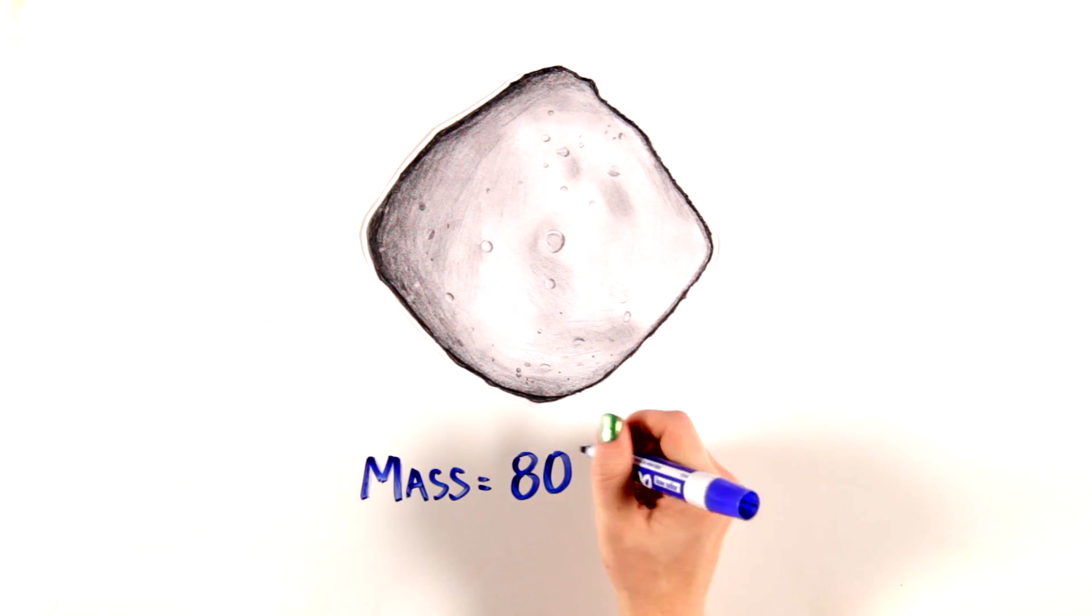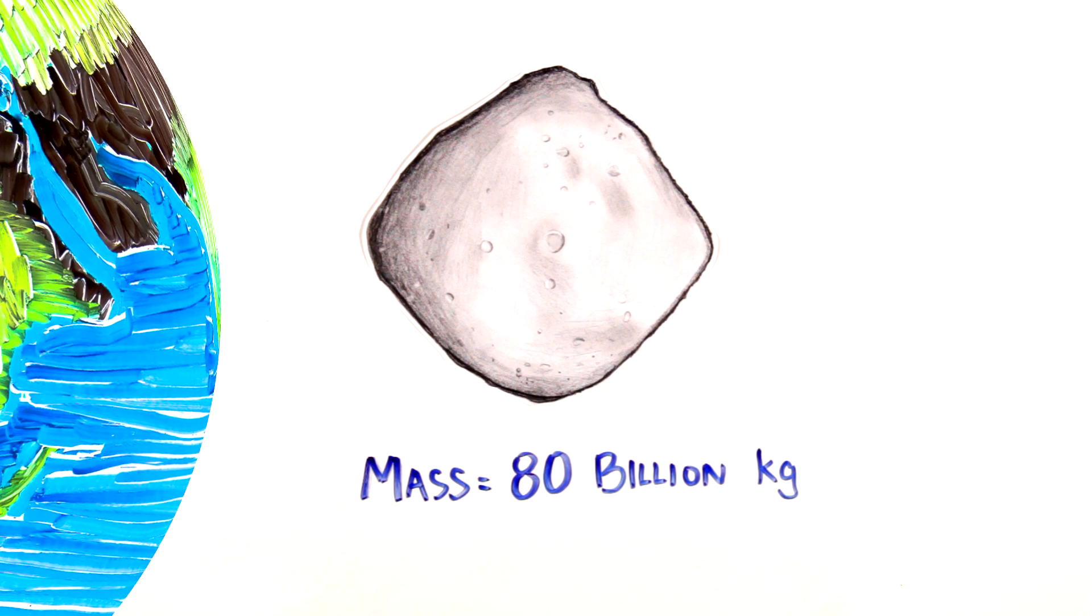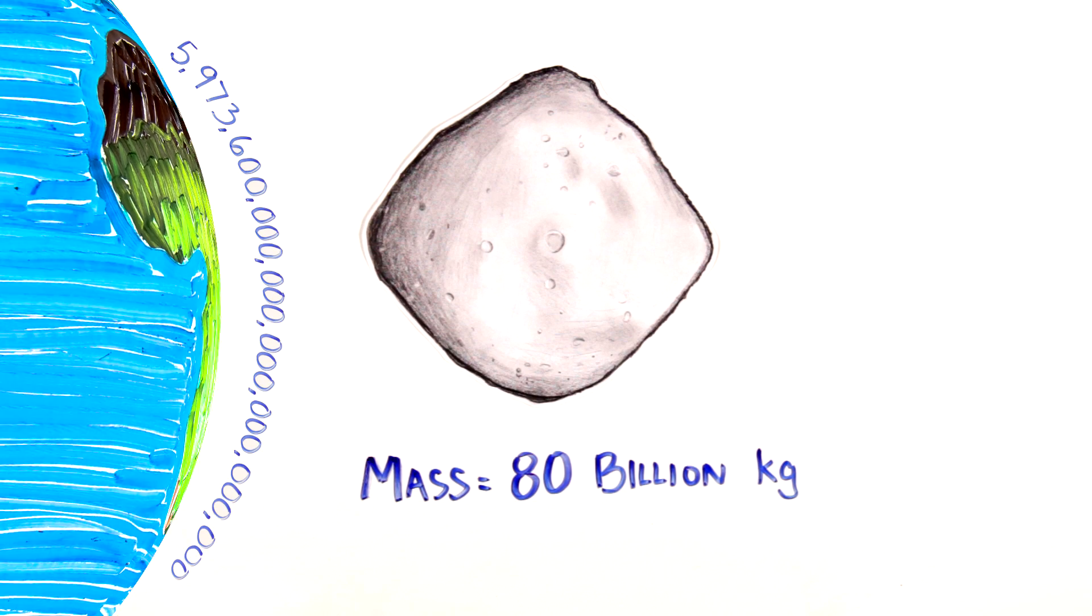So what's gravity like on an asteroid like Bennu? Bennu's mass is about 80 billion kilograms. You'd have to add almost 14 more zeros to get to the value of Earth's mass.